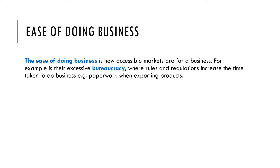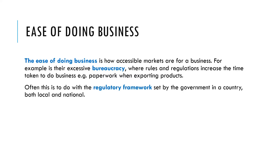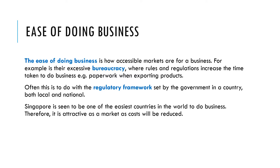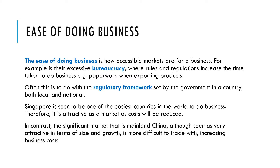Our second category is the ease of doing business — how accessible are markets for a business. For example, is there lots of bureaucracy, form filling, rules and regulations that increase the time taken to do business, such as paperwork describing exported products? This is often to do with the effectiveness of government and the regulatory framework in a country. Singapore is one of the easiest countries in the world to do business and is therefore seen as an attractive market as costs are reduced. In contrast, China, although very attractive in terms of population size and middle class growth, is a more difficult and costly place to do business due to its bureaucracy.